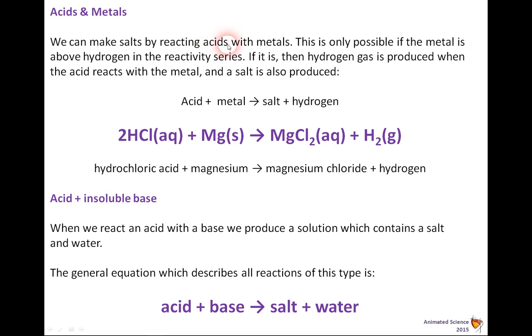We can make a salt by reacting acids with metals. This is only possible if the metal is above hydrogen in the reactivity series. If it is, then hydrogen gas is produced when the acid reacts with the metal, and the salt is also produced. Acid plus metal gives salt plus hydrogen.